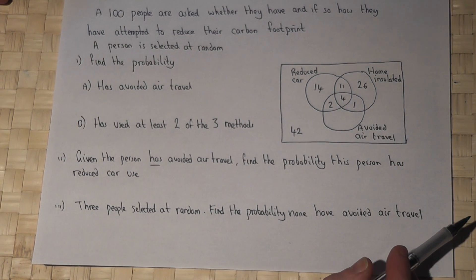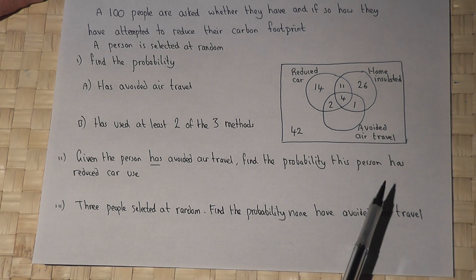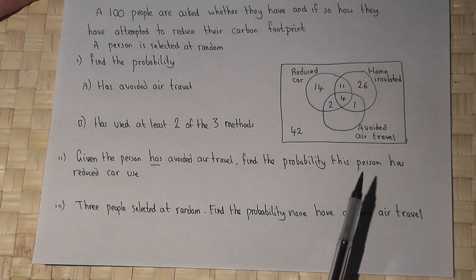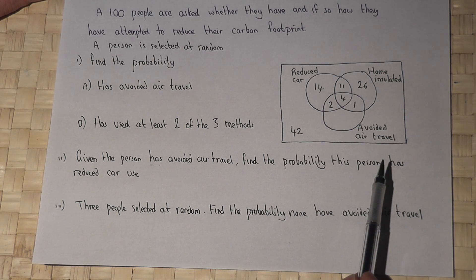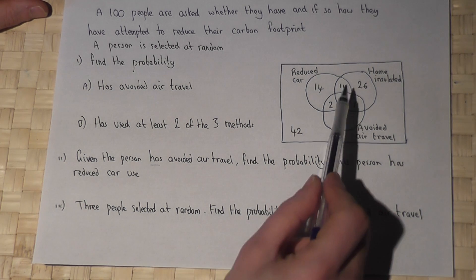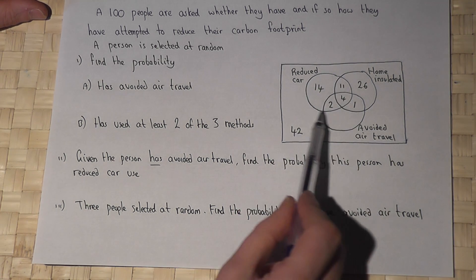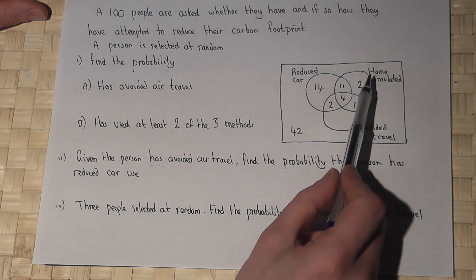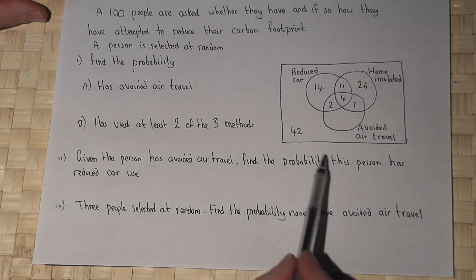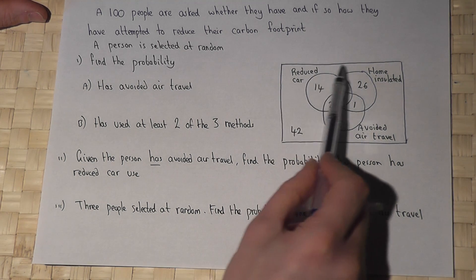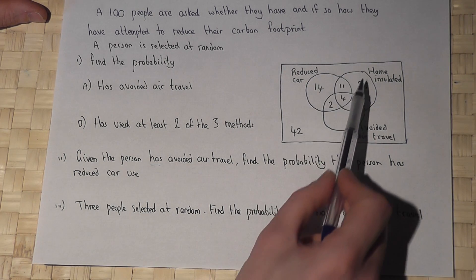This question reviews a typical Venn diagram style problem. 100 people were asked whether they have used three certain methods to reduce their carbon footprint. One was to reduce their car use, that's that circle there. Another was to improve their home insulation. Another was to avoid air travel, and the outer part represents those who have not tried one of those three options.